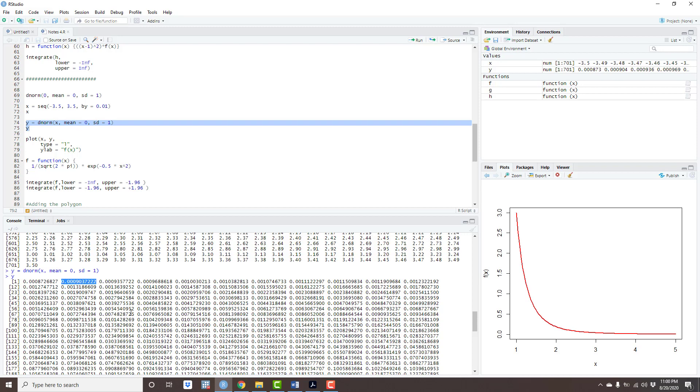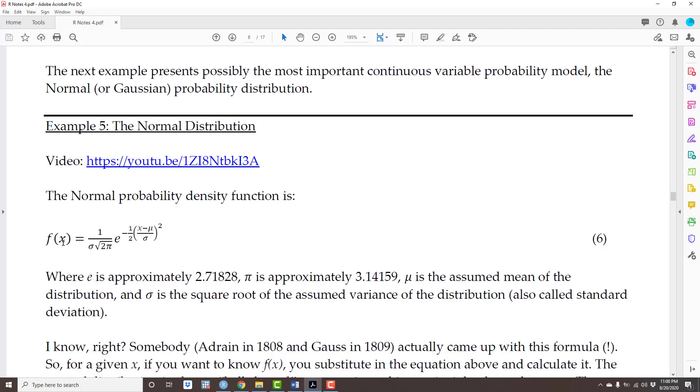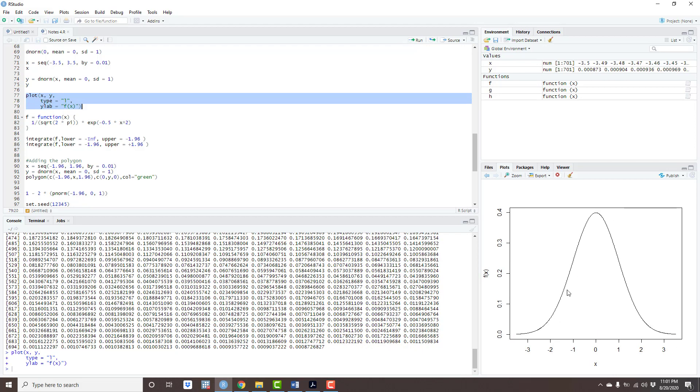So now I have a sequence of x's where y equals f(x) which is given by this formula here. Okay, now we can plot. I'm gonna plot x and y. The type of the graph I want is a line and I'm gonna put a label in the y-axis. The label is f(x). So let's see how that looks. And here it is, that is my normal distribution of mean 0 and standard deviation 1.